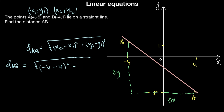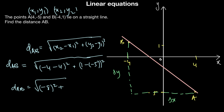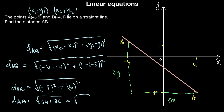Plus y2, which is 1, minus minus 5, the whole thing squared. So the distance AB equals the square root of (minus 8)² plus 6², which is the square root of 64 plus 36, which equals the square root of 100, which equals 10. So this distance AB is equal to 10.